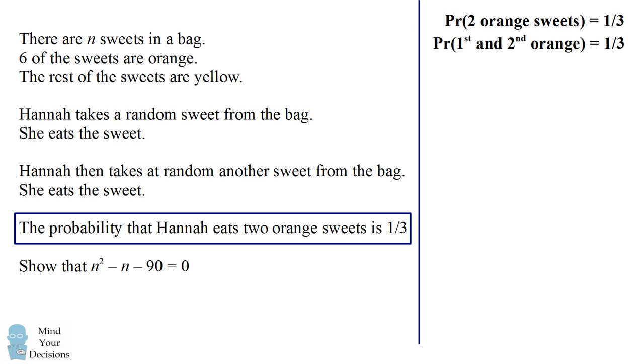That means the first and second draws equal one third, which means the probability of the first draw times the probability of the second conditional on the first is also equal to one third. Now we need to figure out the probability of the first draw being orange and the probability of the second draw being orange conditional on the first draw. So let's work out the probability the first draw is orange.